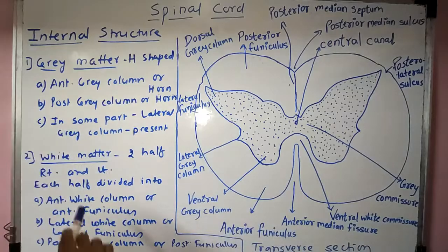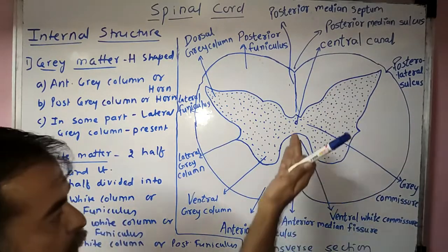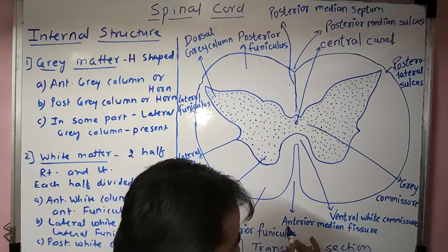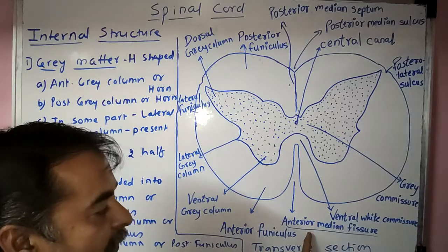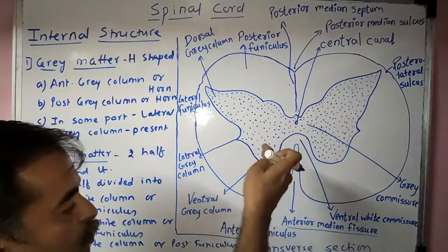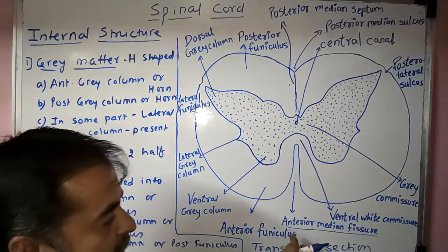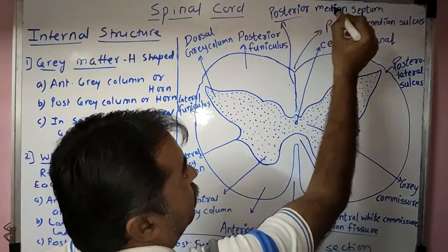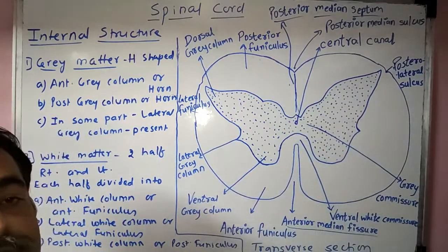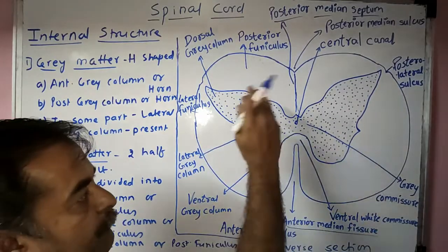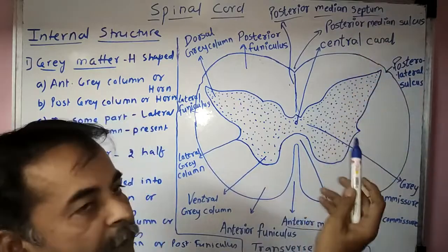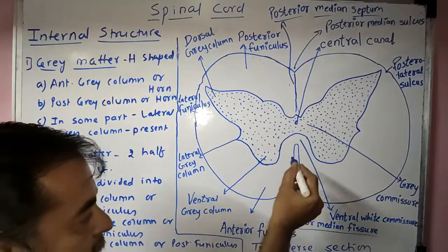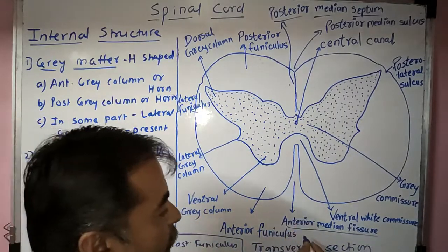The outer part is called the white matter, which is divided into right and left halves. Anteriorly, the two halves are separated by the anterior median fissure. Posteriorly, they are separated by the posterior median septum, which is a partition lying in the midline.